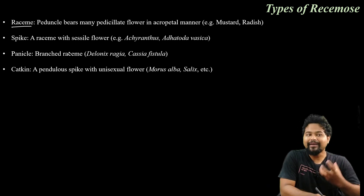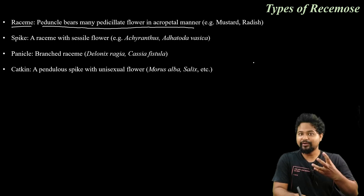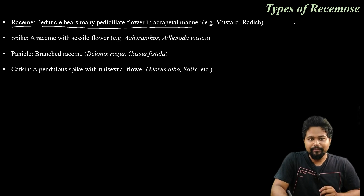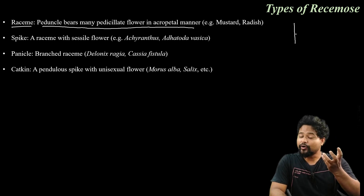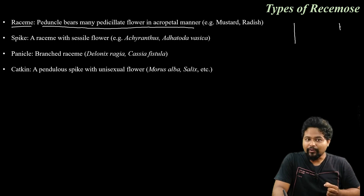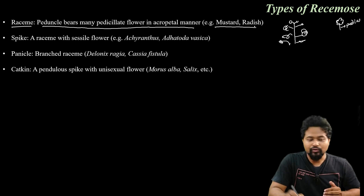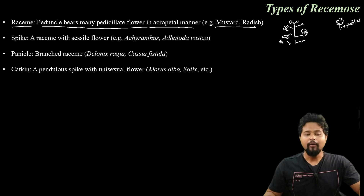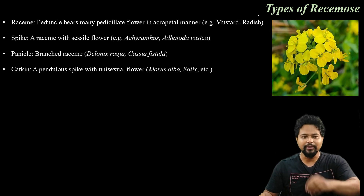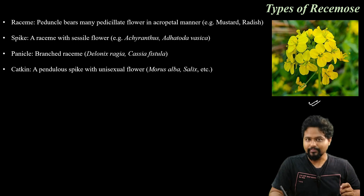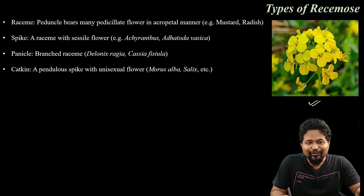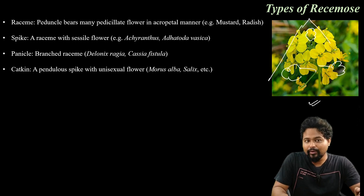First, what do you mean by raceme? The peduncle bears many pedicellate flowers in an acropetal manner. Pedicellate flowers are stalked flowers. For example, mustard seeds. Because morphology is more visual, this flower is a pedicellate flower, and this arrangement is acropetal.